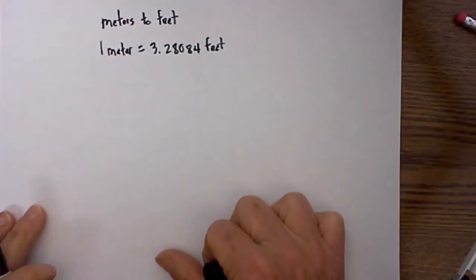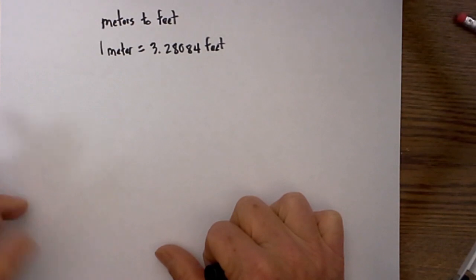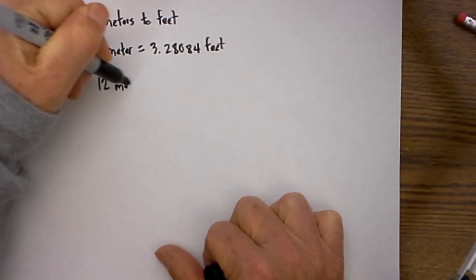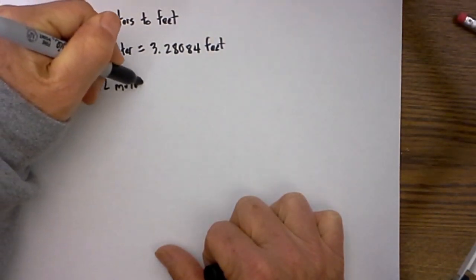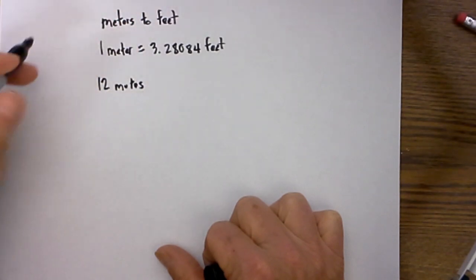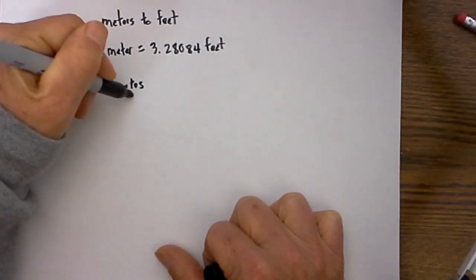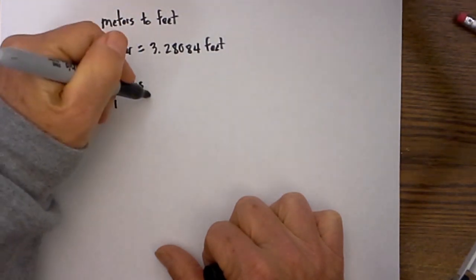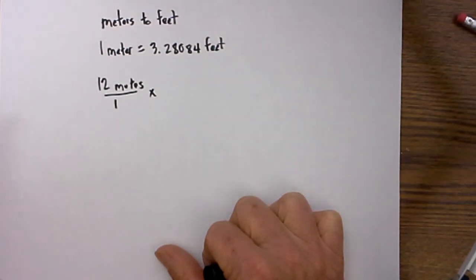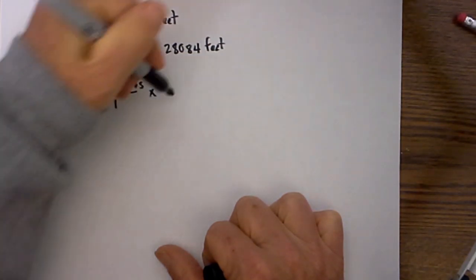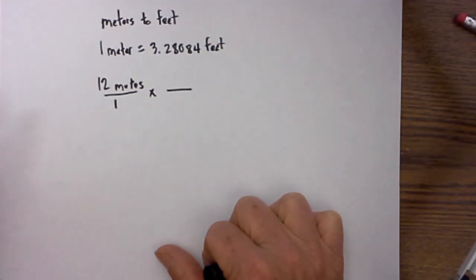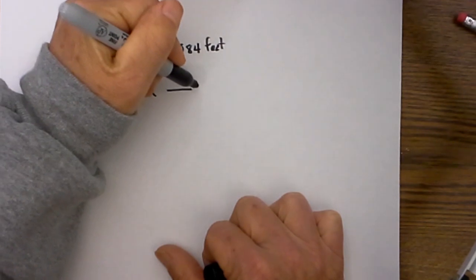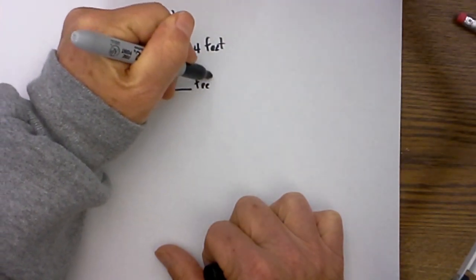Let's jump in and say we have 12 meters and we would like to know how many feet that equals. The first thing I do is place what is given over 1, then write a multiplication sign, draw another fraction, and I always place what I want on the top.